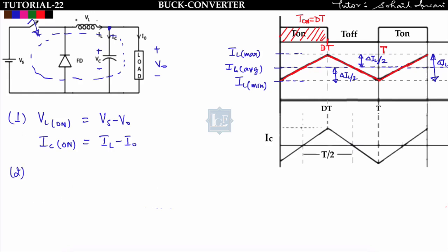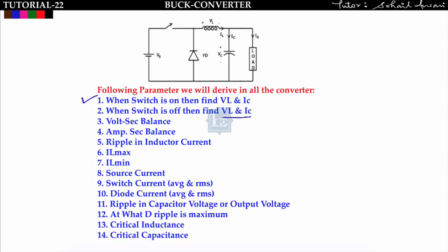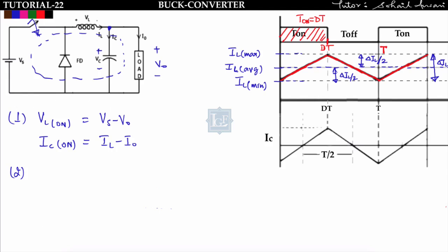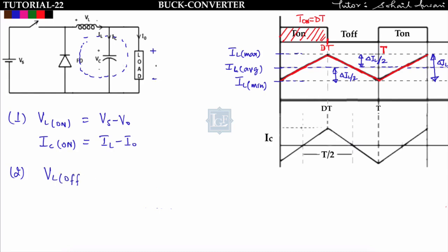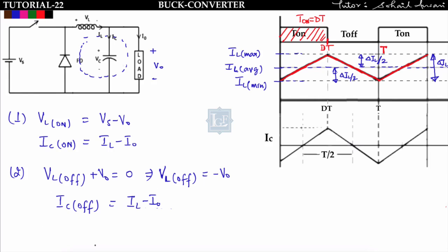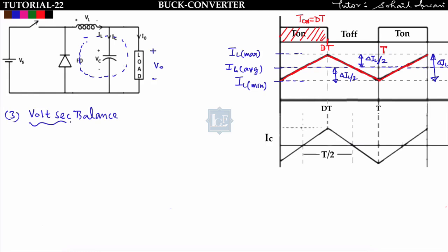For parameter 2 — when switch is OFF — the energy in the inductor freewheels through the diode and across the load. Applying KVL gives VL_off + V0 = 0, so VL_off = −V0. Applying KCL similarly gives IC_off = IL − I0, the same as the ON condition.